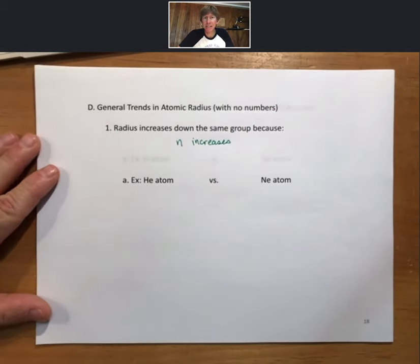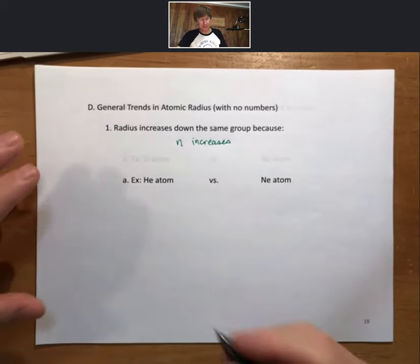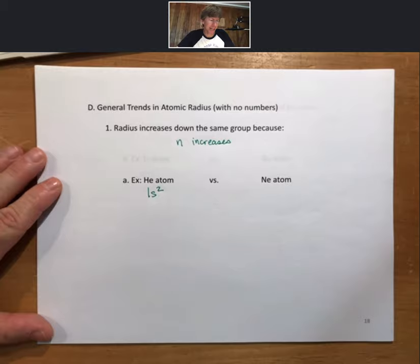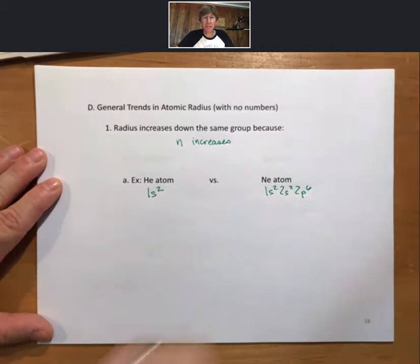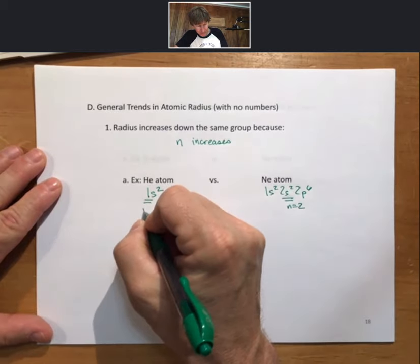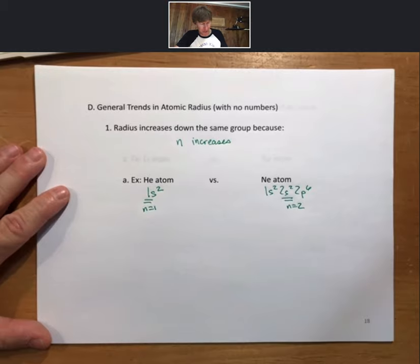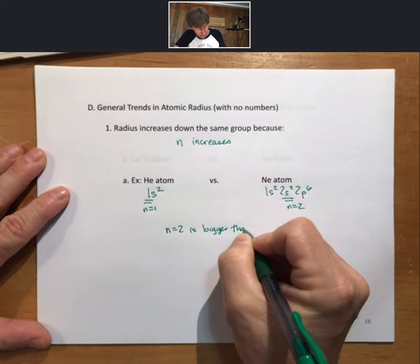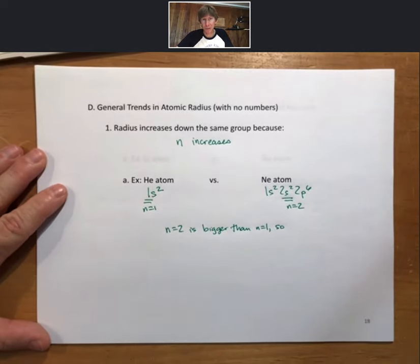And as we've seen in previous lecture outlines, as n increases, the size of the atom increases. So if we look at helium with an electron configuration of 1s2, and neon with 1s2, 2s2, 2p6, n equals 2, n equals 1, and n equals 2 is bigger than n equals 1. So neon is bigger than helium.